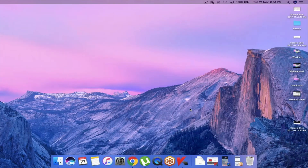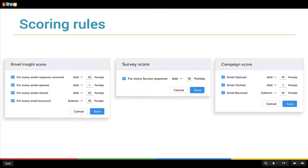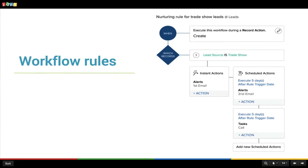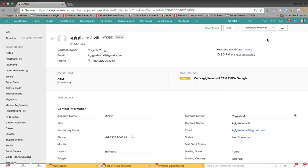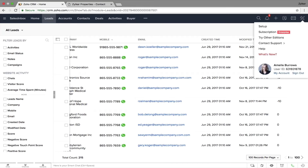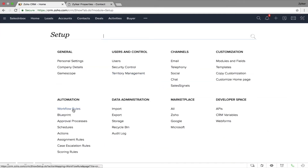Now we have leads assigned and scored. What about the several mundane tasks that are part of our workday? Your team probably spends hours doing them manually — but there's an easier way. With workflow rules you can automate most of those tasks: sending out emails to leads, adding tasks for your sales team to follow up on, or updating field values automatically.